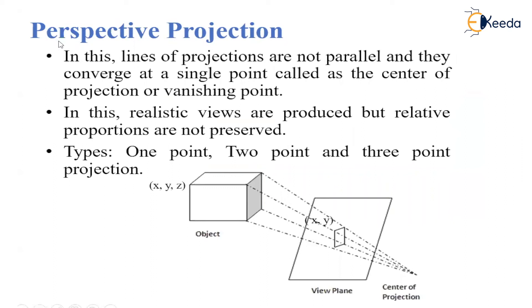The next type of projection is the perspective projection. In perspective projection, the lines of projection are not parallel — they converge at a single point called a vanishing point or center of projection. Realistic views are produced but relative proportions are not preserved. The projection lines converge at a single point, and we call it the center of projection or vanishing point.